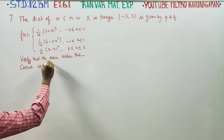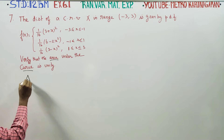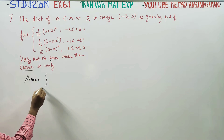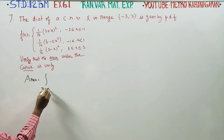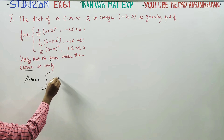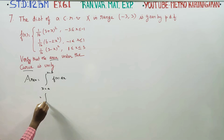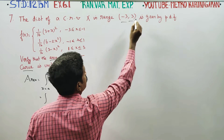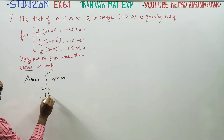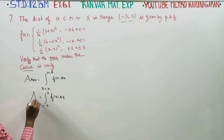Find the area under the curve. We can use integration. The area formula is: integration from lower limit to upper limit of f(x) dx. Here, the lower limit is minus 3 and the upper limit is plus 3. So the area equals the integral from minus 3 to 3 of f(x) dx.